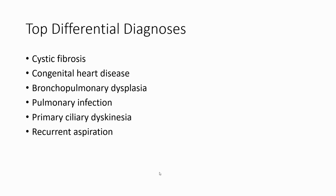Top differential diagnoses of childhood interstitial lung disease include cystic fibrosis, congenital anomalies, bronchopulmonary dysplasia, pulmonary infection, primary ciliary dyskinesia, and recurrent aspiration.